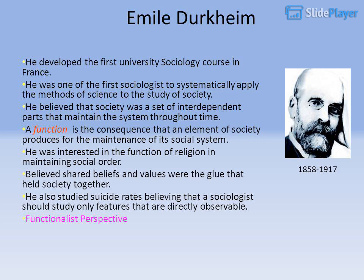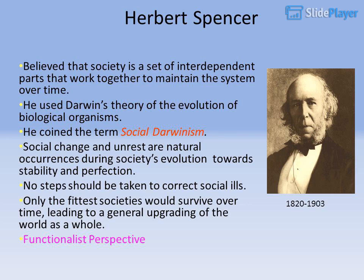Functionalist Perspective, 1858–1917. Herbert Spencer: Believed that society is a set of interdependent parts that work together to maintain the system over time. He used Darwin's theory of the evolution of biological organisms and coined the term social Darwinism. Social change and unrest are natural occurrences during society's evolution toward stability and perfection. No steps should be taken to correct social ills; only the fittest societies would survive over time, leading to a general upgrading of the world as a whole.